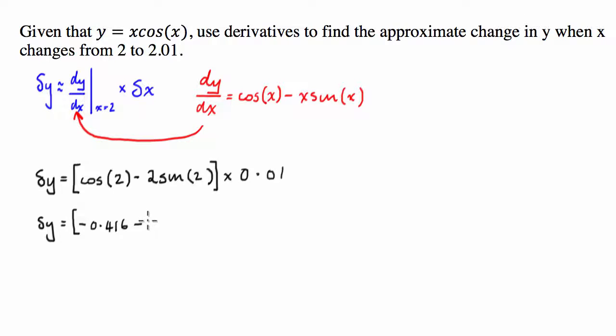And I'm going to subtract 2 times the derivative, 2 times sine 2, and that's 0.909. Once I've done all that, I'm going to multiply that by 0.01.